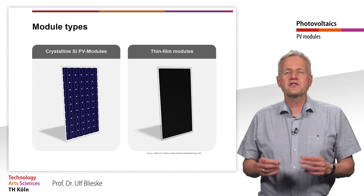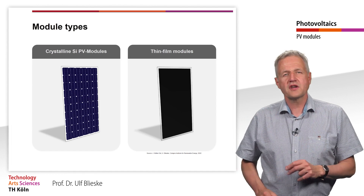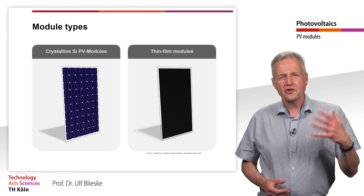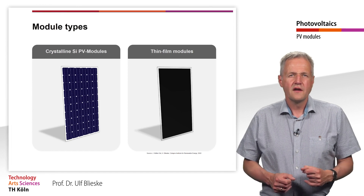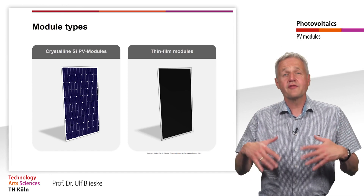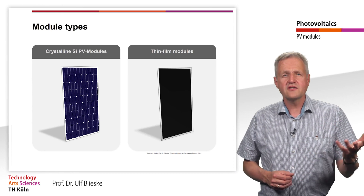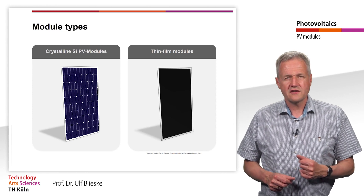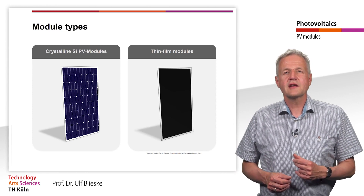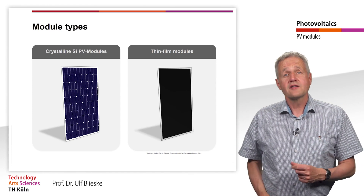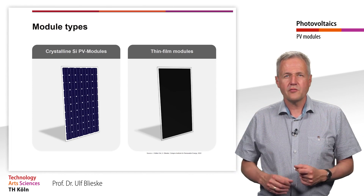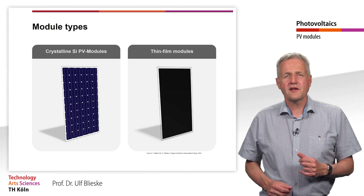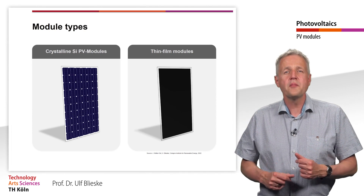First of all, it is necessary to decide on a specific module technology. Basically, two module technologies can be classified: crystalline silicon modules and thin film modules. Crystalline silicon modules have comparatively higher efficiency than thin film modules and are therefore used for the majority of all installations. Monocrystalline silicon modules have higher efficiency than polycrystalline silicon modules, but are also slightly more expensive. Thin film modules usually have lower efficiencies than crystalline silicon modules, but they also offer some advantages.